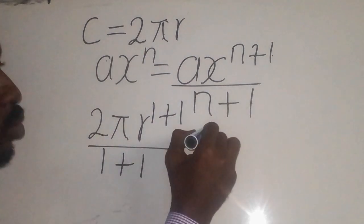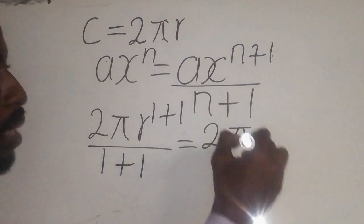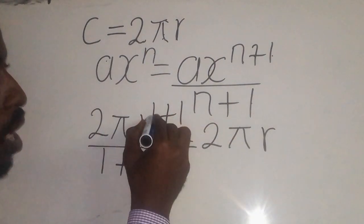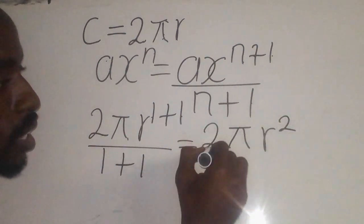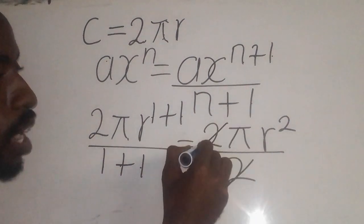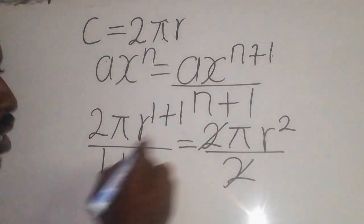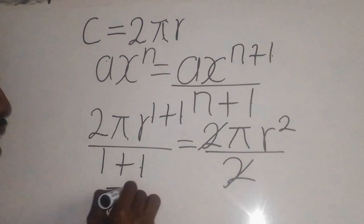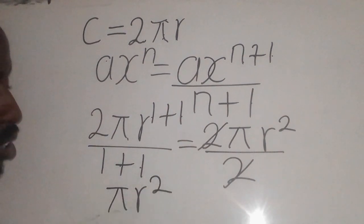So this two here becomes 2πr. One plus one is two, one plus one is two. We can cancel out and remain with this: 2πr^2/2, which simplifies to πr^2.